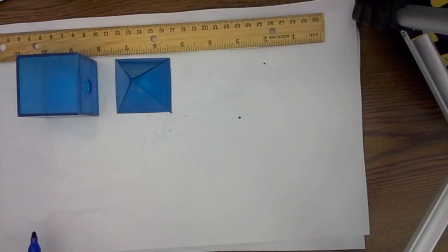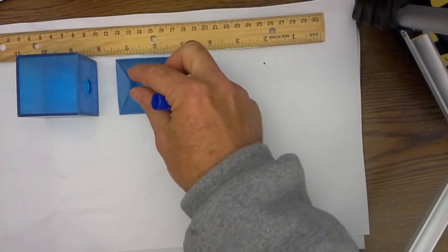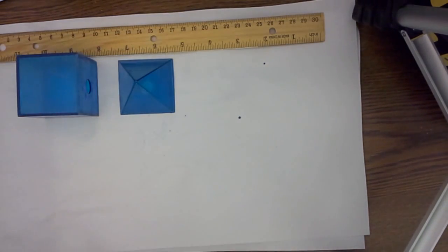Hello, welcome to Moo Moo Math. Today what I would like to do is do a demonstration to show that the formula for a pyramid is indeed one third that of a prism.